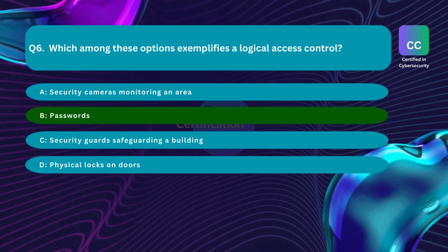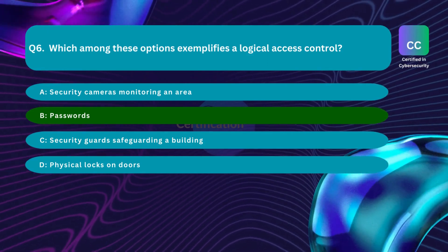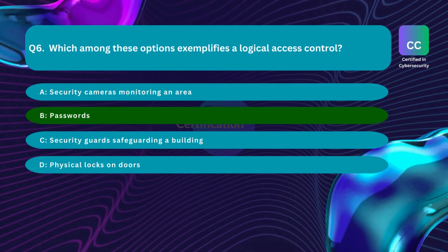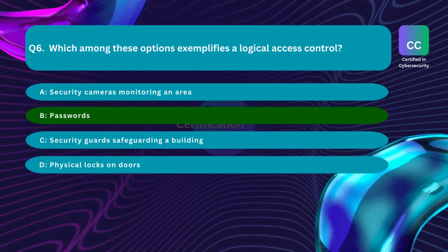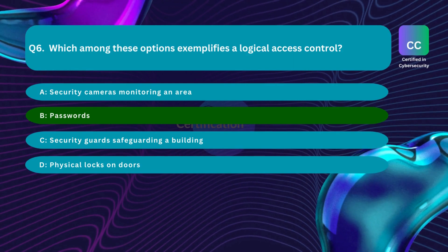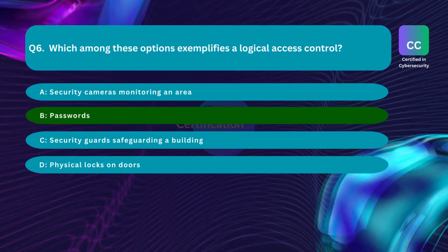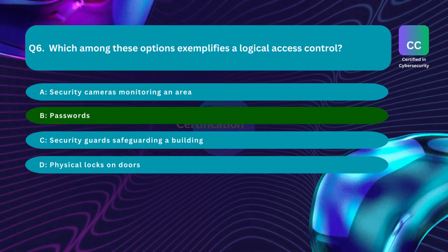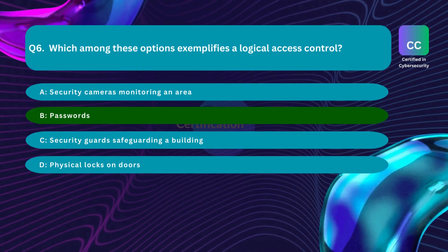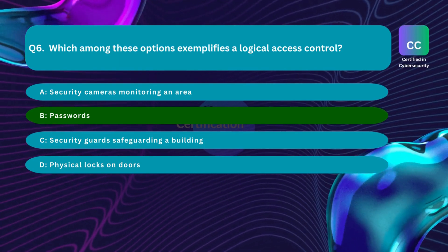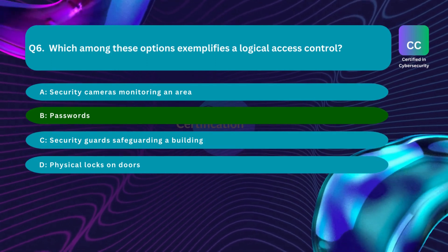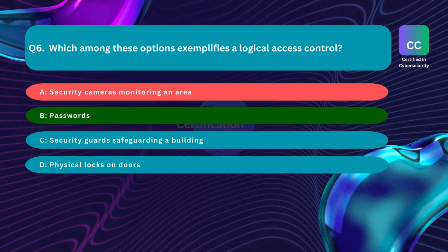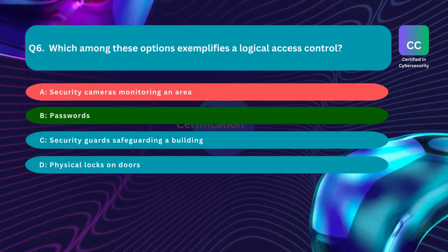There are two types of access control: physical and logical. Physical access control limits access to campuses, buildings, rooms, and physical IT assets. Logical access control limits connections to computer networks, system files, and data. Logical access controls encompass electronic techniques employed to limit entry to systems or digital resources, emphasizing management via electronic mechanisms rather than physical barriers. Passwords are an illustrative instance — users must provide a correct combination of characters to gain entry.